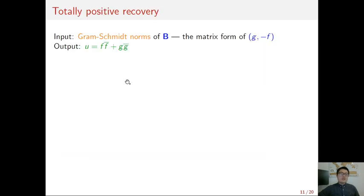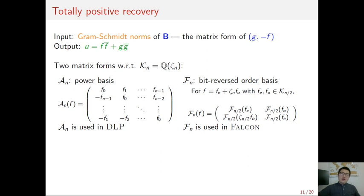The goal of this step is to recover a polynomial U, that is f·f̄ + g·ḡ, from the Gram-Schmidt norm of the matrix form of f and g. And our method depends on the used matrix form. Actually, there are two common matrix forms. The first one is identifying f as an anti-circulant matrix, and the first row is the coefficient vector of f. This matrix form corresponds to power basis, and it is used in DLP.